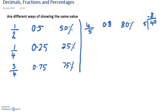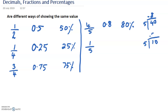Now 1 fifth — that is the fraction 1 over 5. To get the decimal: 1 divided by 5. Since 1 doesn't go into 5, we get 0.2. So 1 over 5 as a decimal is 0.2, and as a percentage it is 20%.